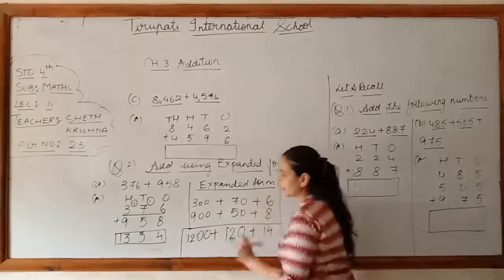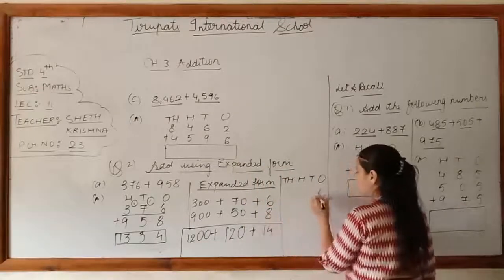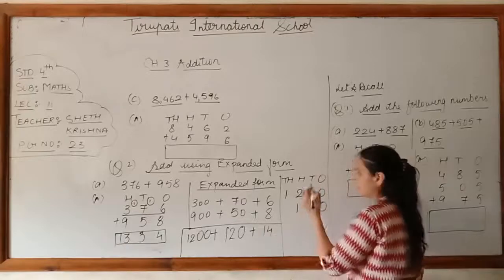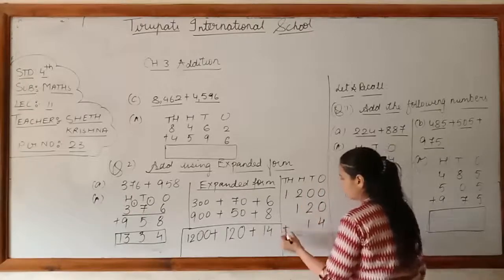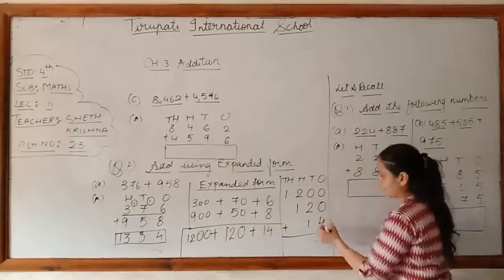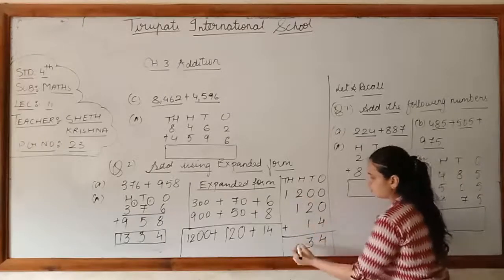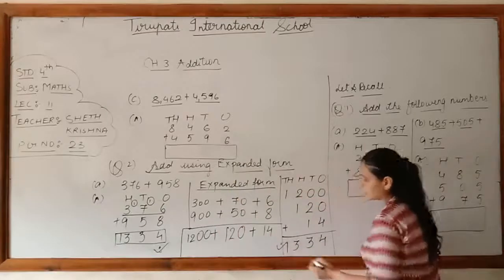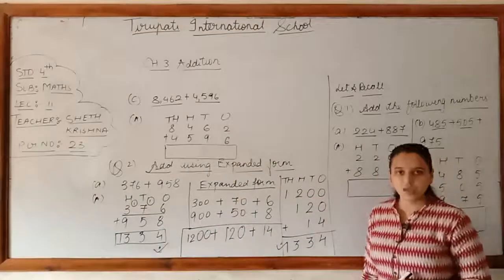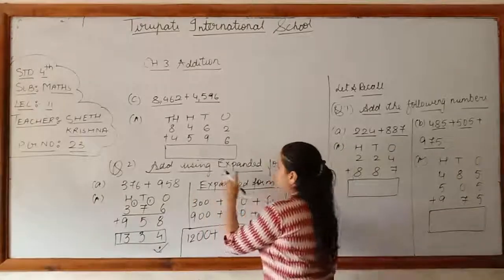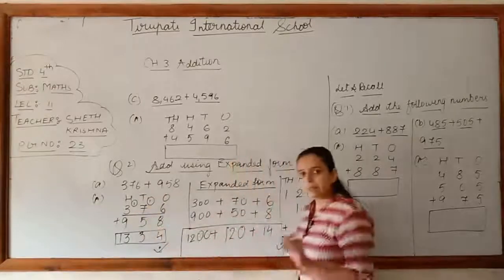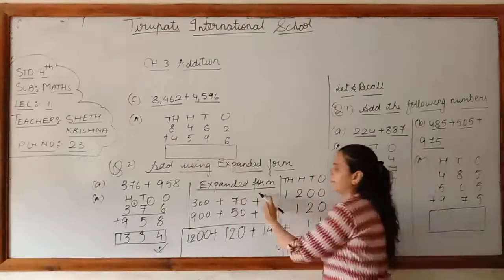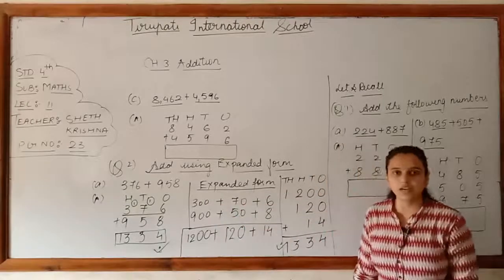To summarize: in 'add using expanded form', first do a simple addition of the given digits. Then write the expanded form of each number and add each group without carrying over. Write the answer directly in place. The digits in the expanded result go into the thousands, hundreds, tens, and ones columns, and the final answer must match the simple addition.